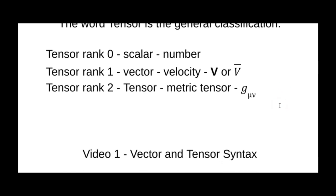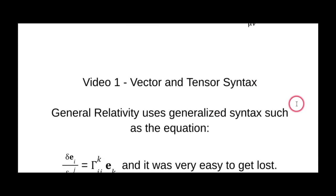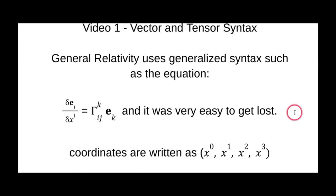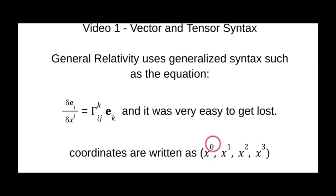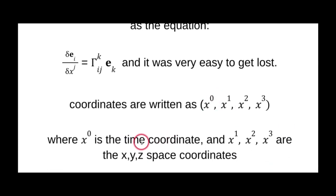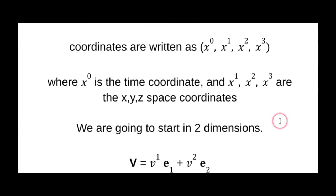Vector and tensor syntax in general relativity is generalized — and very confusing. When I first started, I got lost so many times seeing equations with i's, j's, and k's up and down. The coordinates in general relativity are written as x superscript zero, one, two, three. x⁰ is the time coordinate; x¹, x², x³ are the spatial xyz coordinates. General relativity works in four dimensions. We're going to start in two dimensions because it's much easier and you learn just as much.